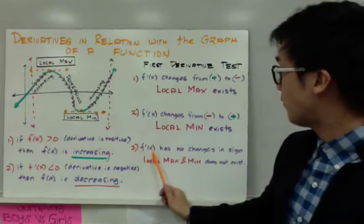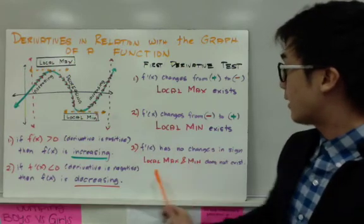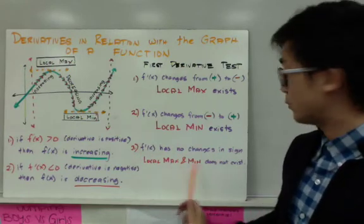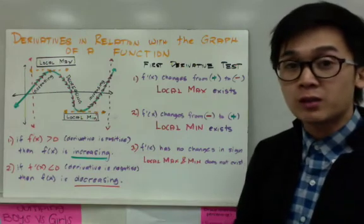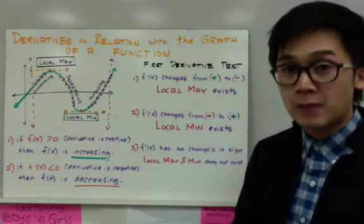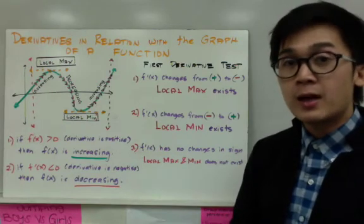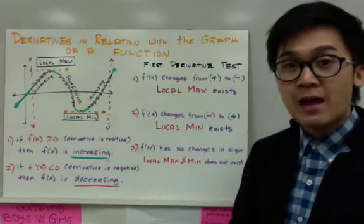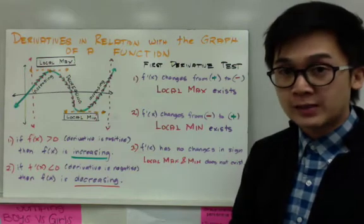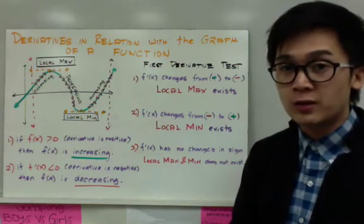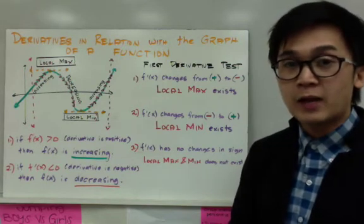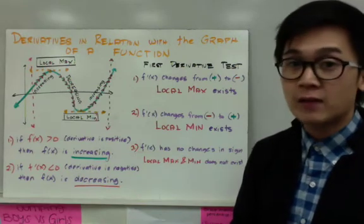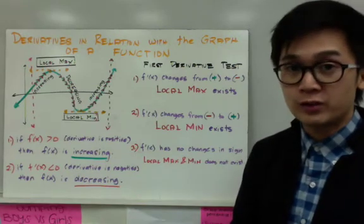For the third condition, if f prime of x has no change in sign, then neither local maximum nor local minimum exists. It's also possible that there's no local minimum or maximum in your function. Now let's have our first example where I'll give you a function without the graph and we'll analyze the behavior using the first derivative.